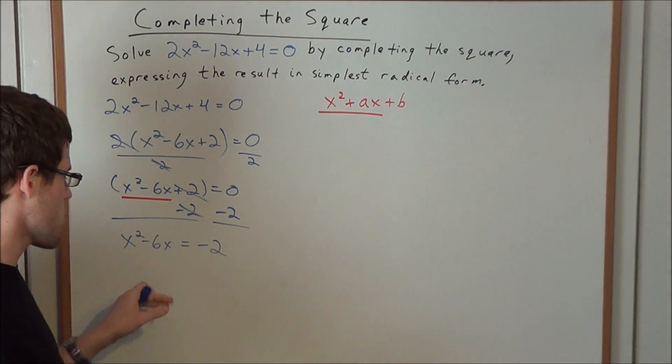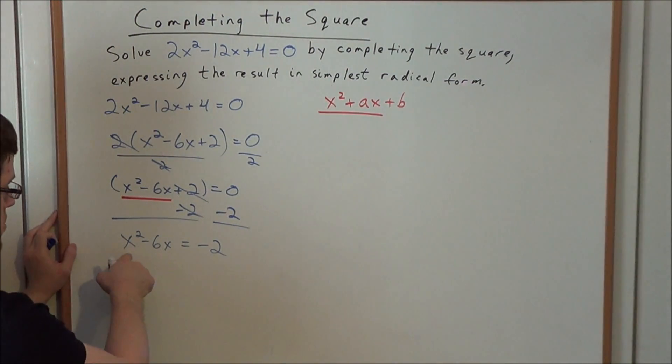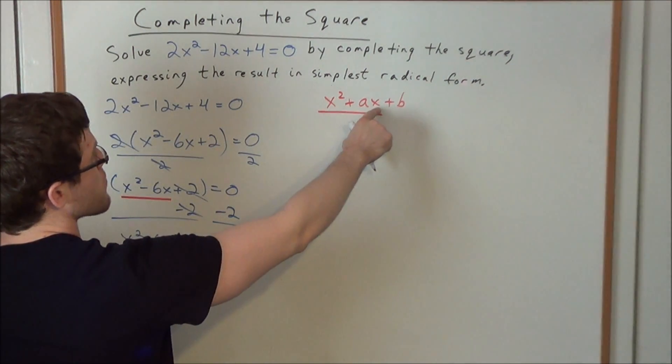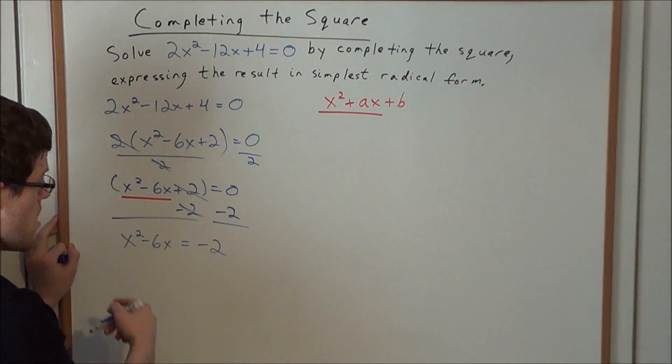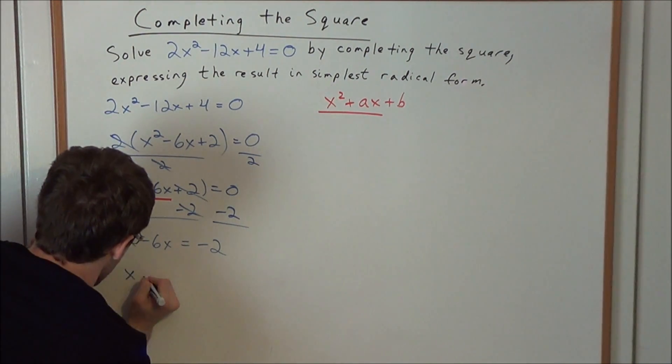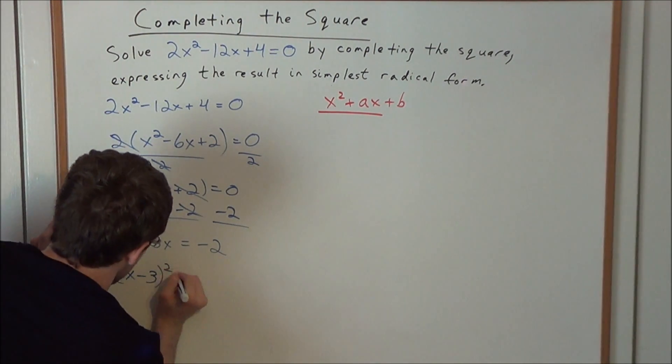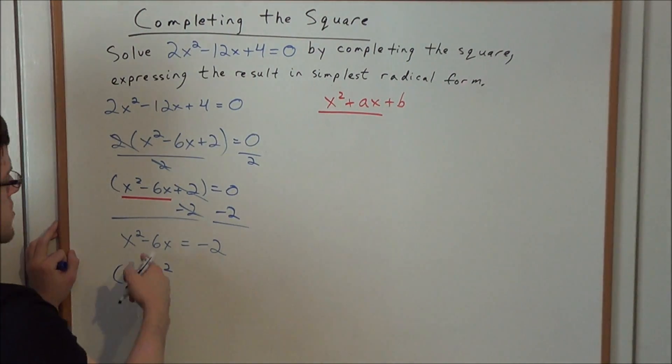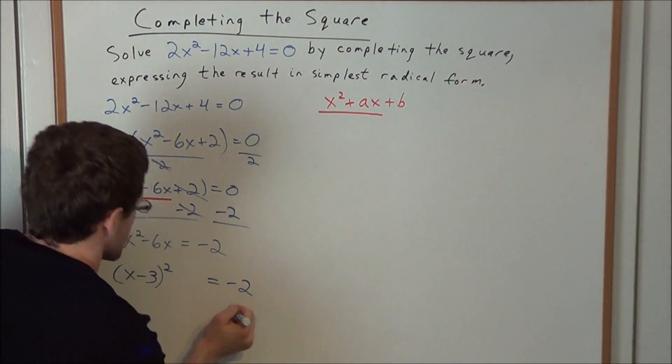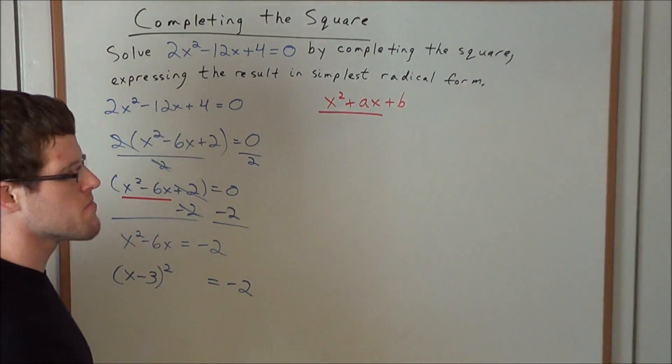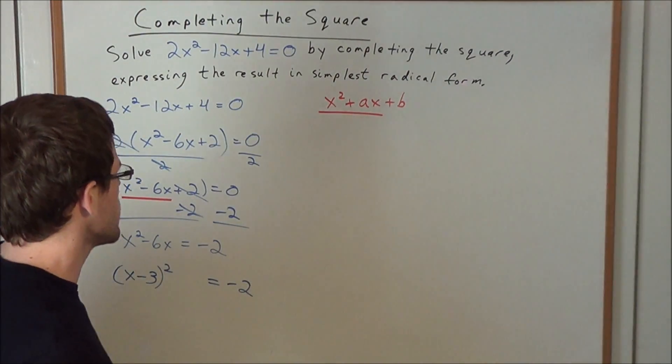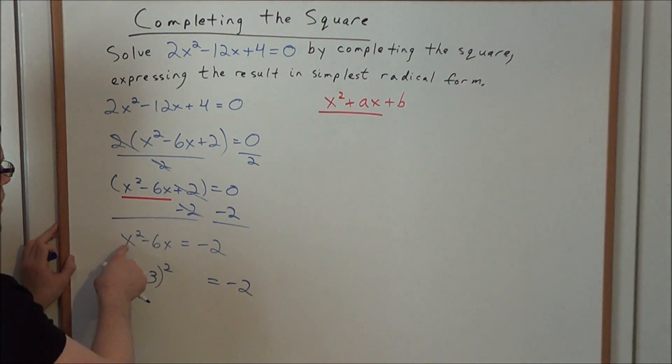But now, to get started with completing the square, now that we have the x² and the x term isolated, we need to look at one half of the term in front of the x variable. And now the term in front of the x variable is a -6. So half of -6 would be -3. So we get started with this problem by writing (x - 3)² and we leave a space and then = -2. And in this space, we're going to have plus or minus some extra term, but the goal is to substitute x² - 6x in terms of a perfect square.